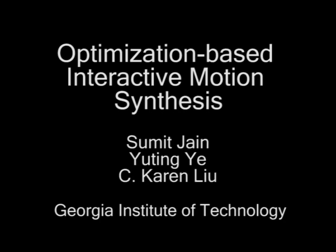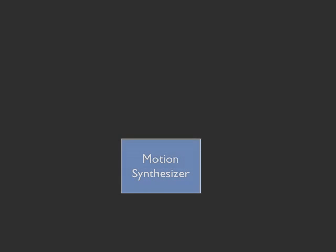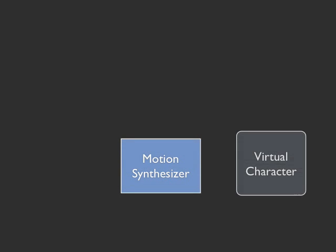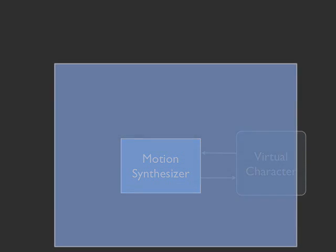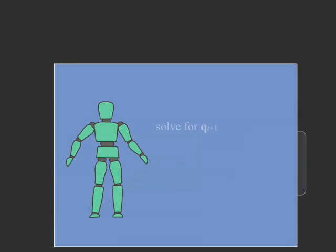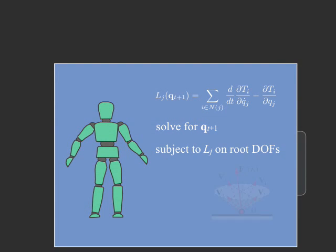This paper presents an optimization-based framework to synthesize responsive behaviors and physically realistic motions in a dynamically varying environment. The core of this framework is a motion synthesizer that solves for the joint configuration as the solution to a sequence of constrained optimizations. Lagrange's equations of motion and Coulomb's friction model are respected as constraints to ensure physical realism.